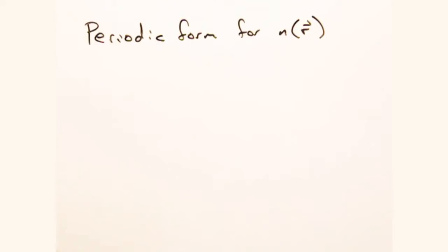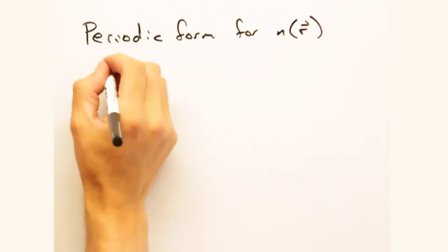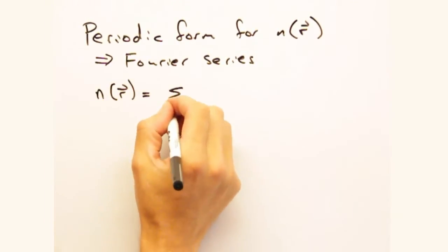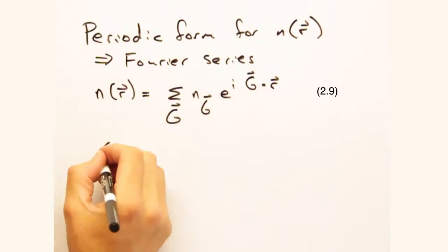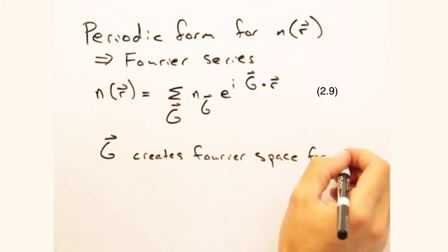But what periodic function should we use? I don't know. But that's okay, because I know any periodic function can be built using a combination of other periodic functions, like sines and cosines. But because there might be complex components, we'll build n of r as a summation of complex exponentials that are summed over this vector g. And really, this vector g business represents the Fourier space that we build our wave in.